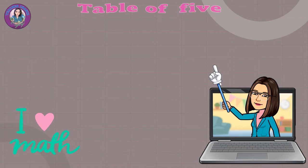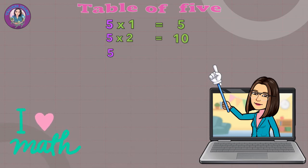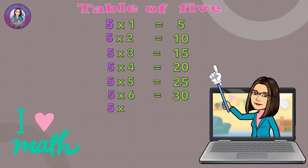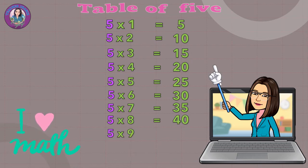Table of 5. 5 x 1 equals 5. 5 x 2 equals 10. 5 x 3 equals 15. 5 x 4 equals 20. 5 x 5 equals 25. 5 x 6 equals 30. 5 x 7 equals 35. 5 x 8 equals 40. 5 x 9 equals 45. 5 x 10 equals 50.